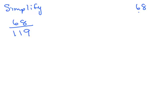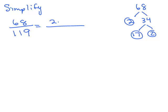68 is even, so I'm going to write that as 2 times 34. Then 34 is even, so I'm going to write that as 17 times 2. Now there's my prime factorization: 2 times 2 times 17.